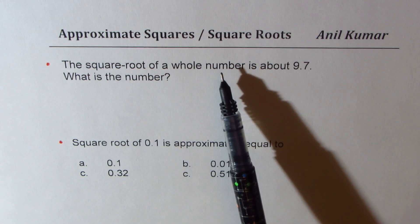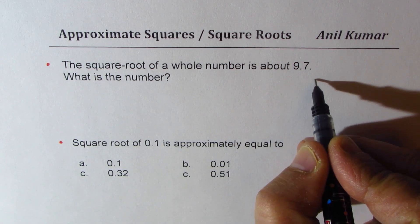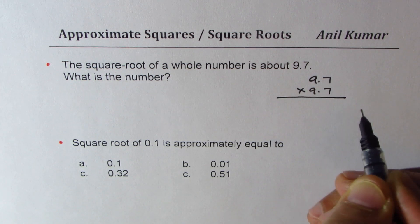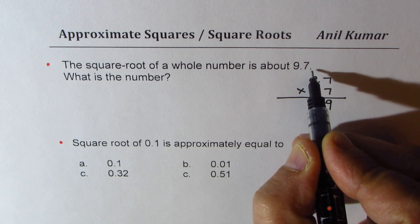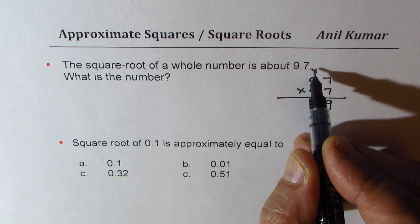are given the square root of a whole number, what we can do is calculate 9.7 times 9.7 to get the result. So 7 times 7 is 49, carry 4. 7 times 9 is 63 plus 4 is 67.